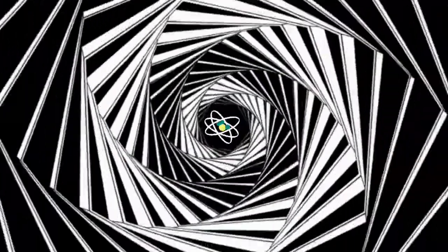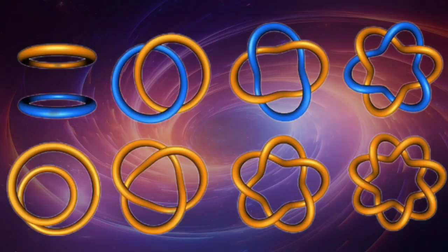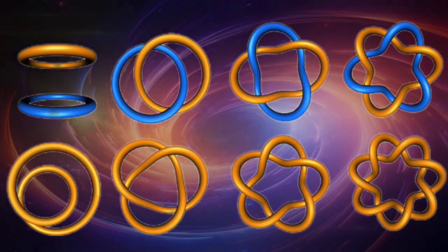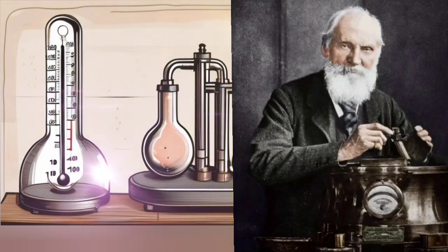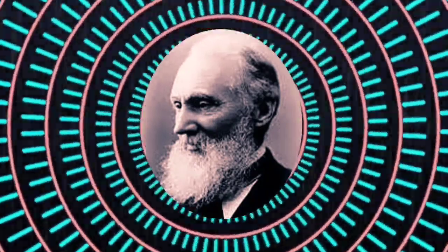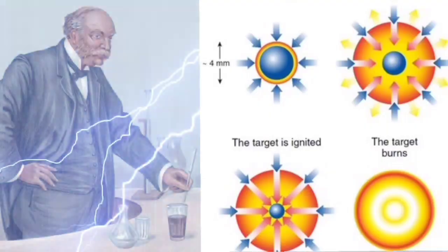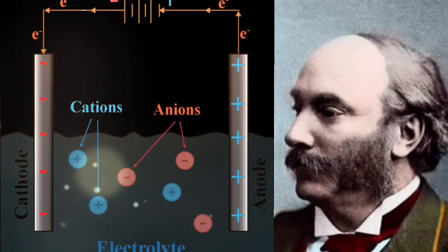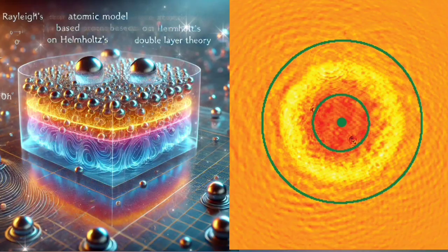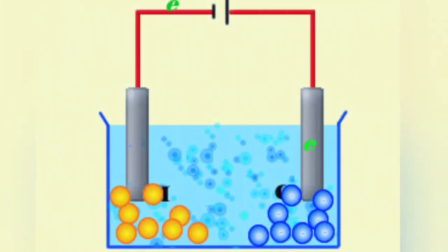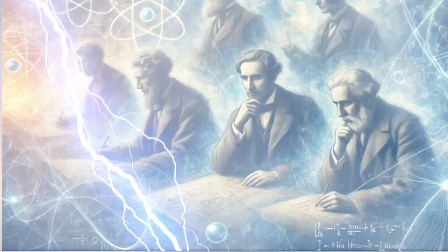So that's where these early atomic models come in, right? Like, each one was trying to solve that puzzle. Exactly. It was a race to come up with the best explanation for how electrons and atoms work together. So let's talk about some of these early attempts. And honestly, some of them are pretty wild, like Kelvin's vortex model. Kelvin imagined the atom as this swirling vortex of electrical charge, with the electron kind of trapped inside. A vortex. I mean, where did that even come from? Well, Kelvin was a brilliant guy, worked a lot with fluid mechanics, so it makes sense he'd draw inspiration from that. So he was looking at the world around him, trying to see if any patterns would apply to the atom. Yeah, and it's not just Kelvin. Another example, Rayleigh's two fluids model.